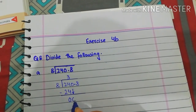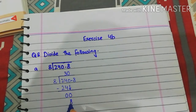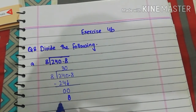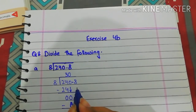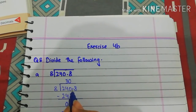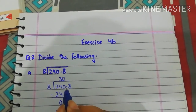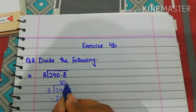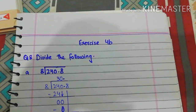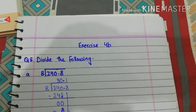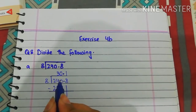Bring down the next digit, which is 0. 8 zeros are 0; 0 minus 0, remainder 0. The next digit is 8, but before it we have a decimal, so we place the decimal in the quotient. Bring down the next digit, which is 8. 8 ones are 8; 8 minus 8, remainder 0. So the answer we get is 30.1.